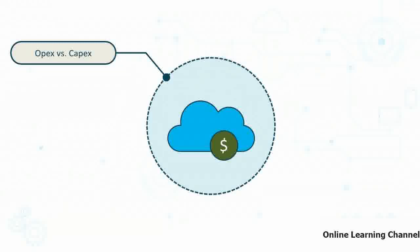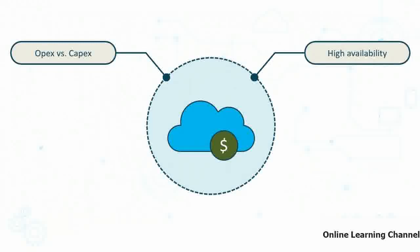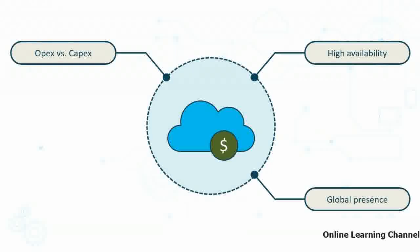Another thing to think about with Microsoft Azure is high availability. There are Azure data centers all over the world, giving it a global presence. This means you can have services deployed in one geographical region and configure them to be replicated in a secondary region, so that a primary region disruption doesn't mean you lose access to that service.